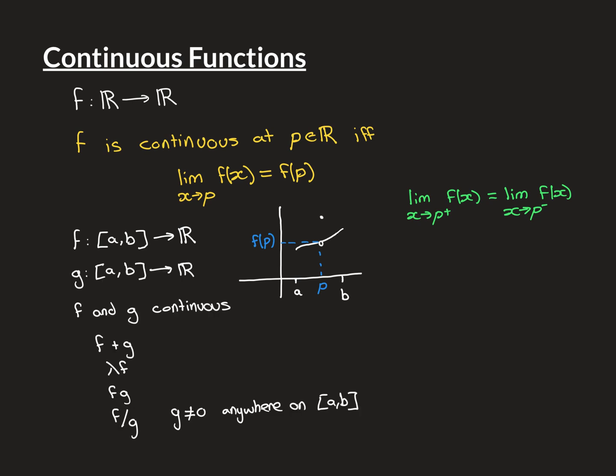The final thing I'd like to talk about is how you can construct new continuous functions from pre-existing ones. Say we have two functions f and g on the same domain [a, b], both real-valued and both continuous everywhere on their domain. Then you can construct new functions on [a, b] → ℝ and conclude they are also continuous: adding them gives f + g (continuous), multiplying by a real number λ gives λf (continuous), multiplying them together gives f·g (continuous), and dividing gives f/g, which is continuous provided g is never equal to zero anywhere on [a, b].